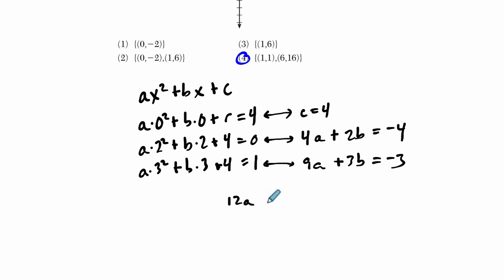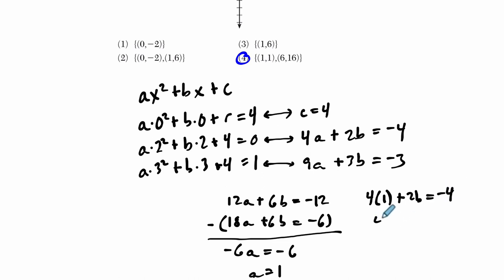I'll multiply the first equation by 3. So I'll get 4a times 3 is 12a, 2b times 3 is 6b, and then negative 4 times 3 is negative 12. And if I multiply my second equation by 2, I get 18a plus 6b equals negative 6. I've got two equal terms, so I could just subtract them out. And I get negative 6a equals negative 6. And a is 1. So we've got a, and we can find b by plugging it back into any of these equations here.